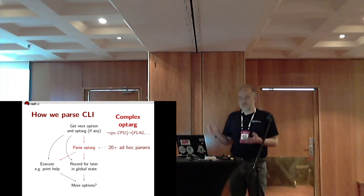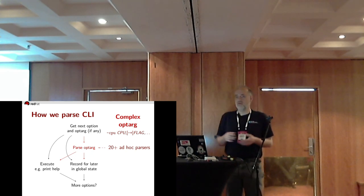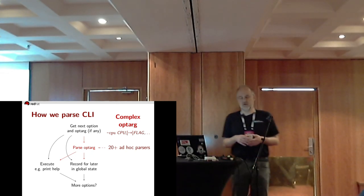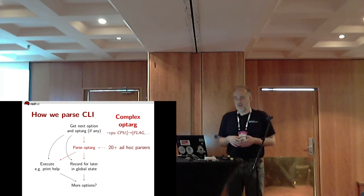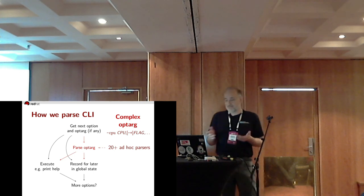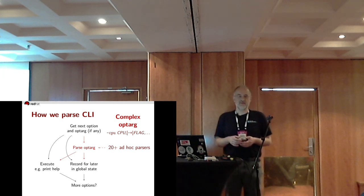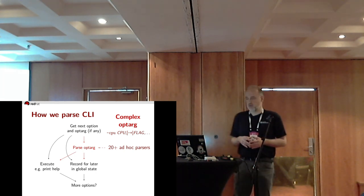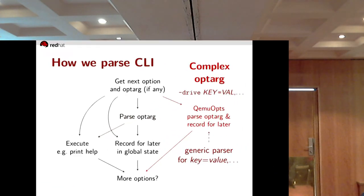Of course we have more complex options — options with complex arguments that need to be parsed. That's not hard; we splice in a parser. We've done that pretty enthusiastically, so by now we have more than 20 of them, all different. Eventually somebody realized that adding more and more ad hoc parsers is silly, so they set out to create the QEMU options argument parser to end all QEMU options argument parsers — and that is QEMUopts.